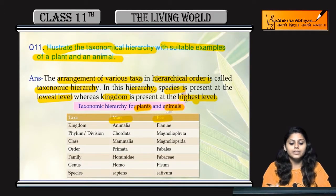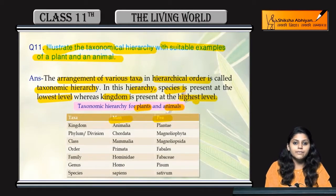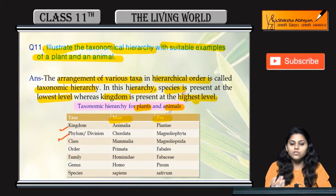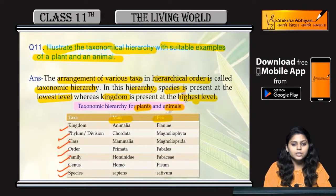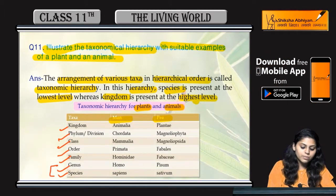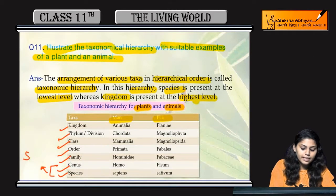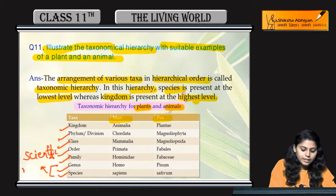We take examples of a plant and an animal — specifically a pea plant and human beings. You can see different taxa: kingdom, phylum (or division in case of plants), class, order, family, genus, and species. The combination of genus and species is called the scientific name.